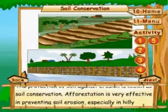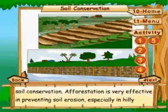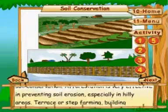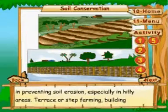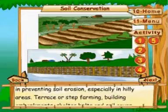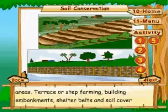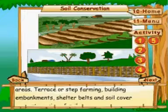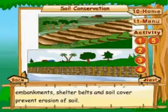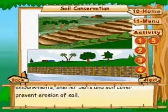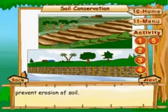Afforestation is very effective in preventing soil erosion, especially in hilly areas. Terrace or step farming, building embankments, shelter belts, and soil cover also help prevent erosion of soil.